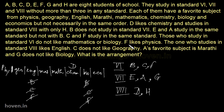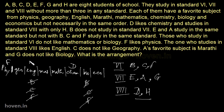Then he says F likes physics. This is a very concrete thing given to us, so we will straightaway put F here with physics. The one who studies in standard 8th likes English — wait, in standard 8th we have D and H. D is already allocated to chemistry, so H should go to English. So we will put H here with English.